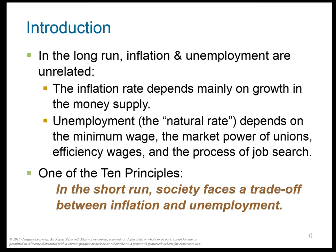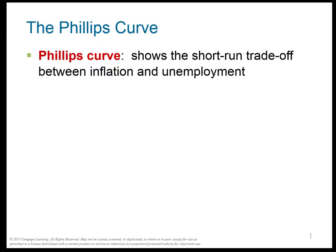Unemployment depends on things that change production, like the minimum wage, the market power of unions, efficiency wages — that's when wages are too high — and the process of job search. One of the ten principles was that in the short run, society faces a trade-off between inflation and unemployment.